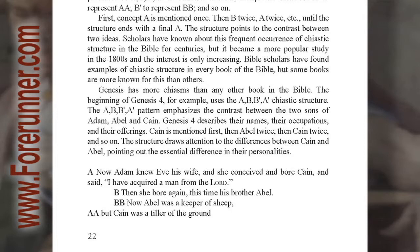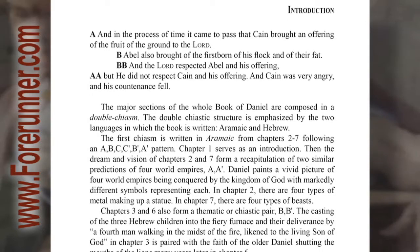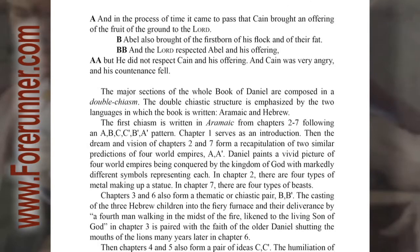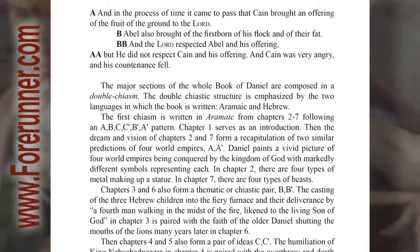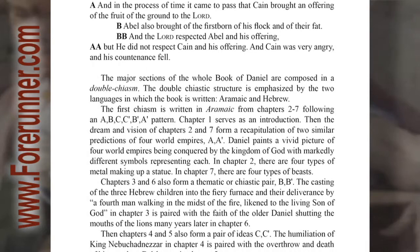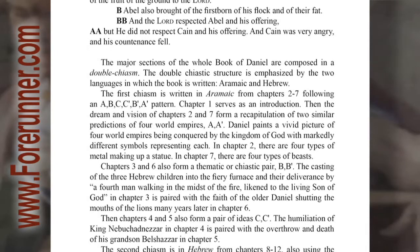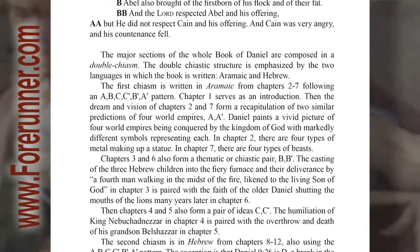A. Now Adam knew Eve his wife, and she conceived and bore Cain, and said, 'I have acquired a man from the Lord.' B. Then she bore again, this time his brother Abel. B. Now Abel was a keeper of sheep. A. But Cain was a tiller of the ground. A. And in the process of time it came to pass that Cain brought an offering of the fruit of the ground to the Lord. B. Abel also brought the firstborn of his flock and of their fat. B. And the Lord respected Abel and his offering. A. But he did not respect Cain and his offering. And Cain was very angry, and his countenance fell.